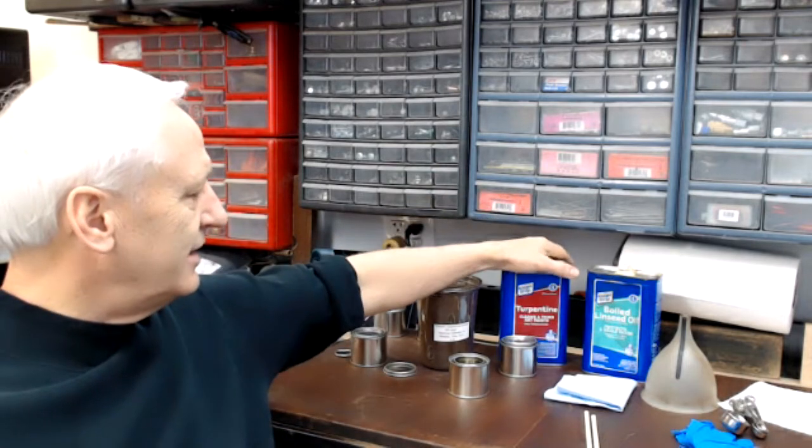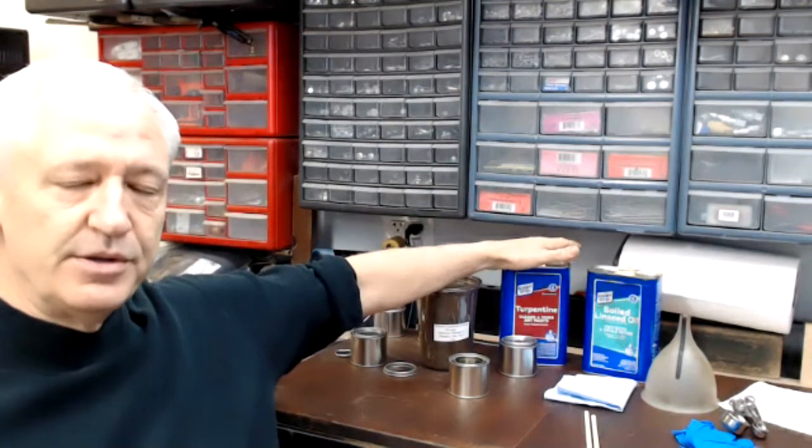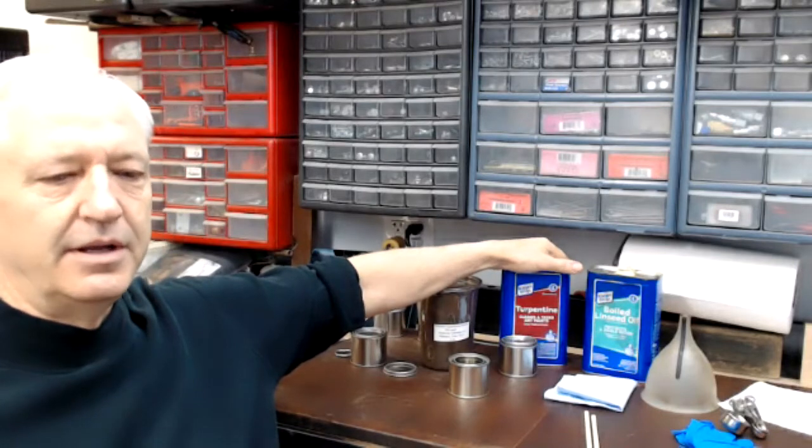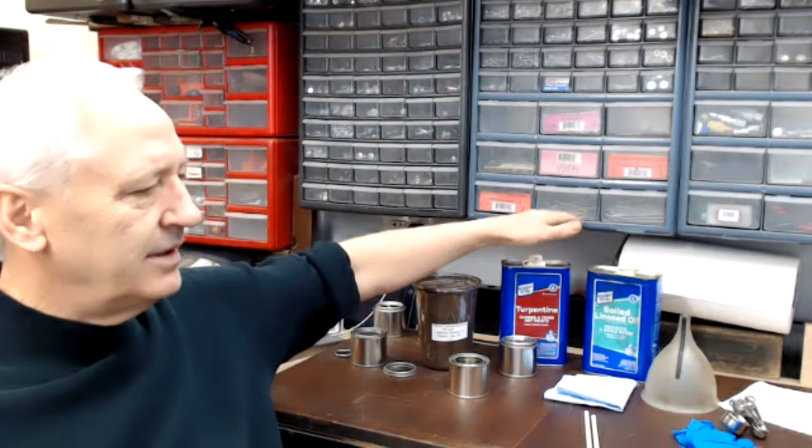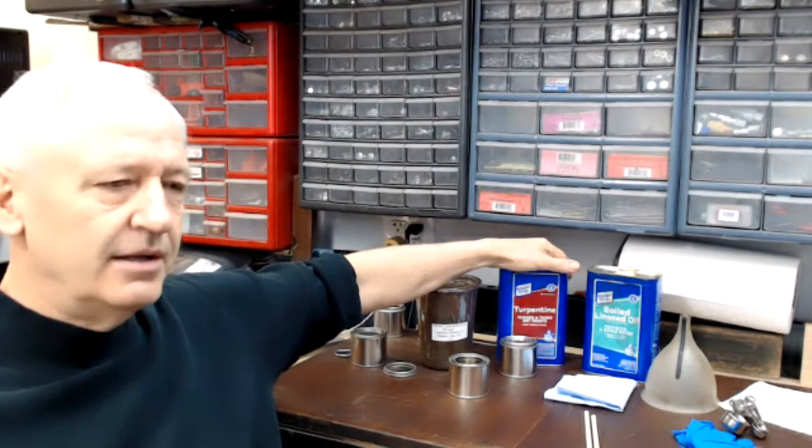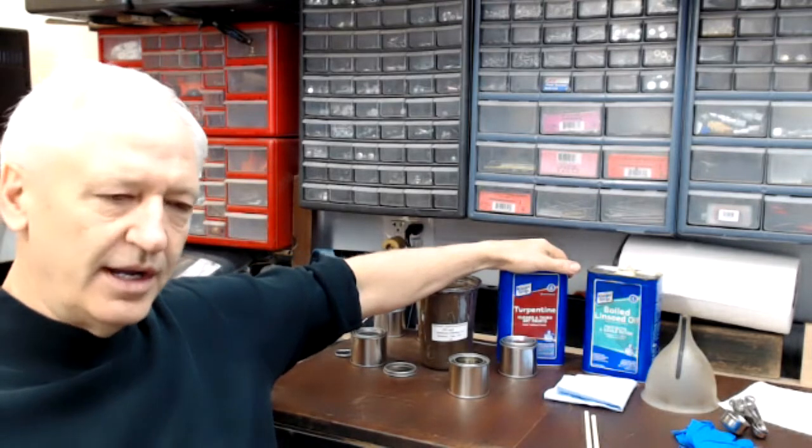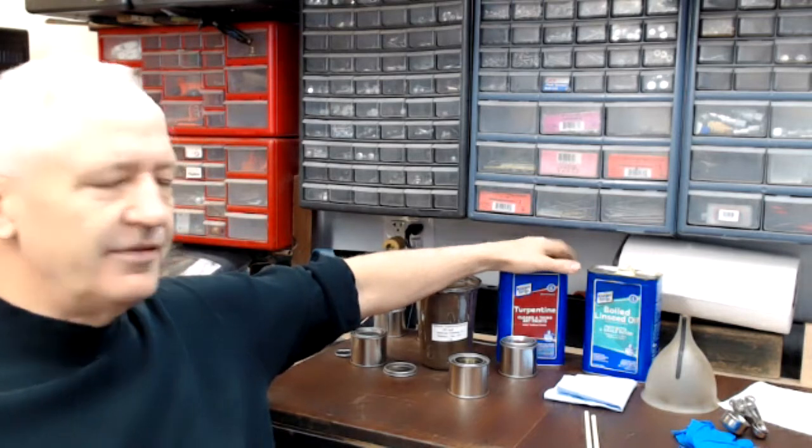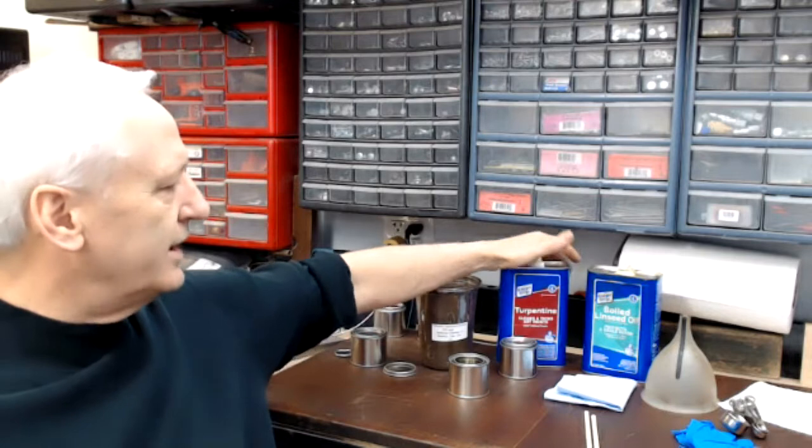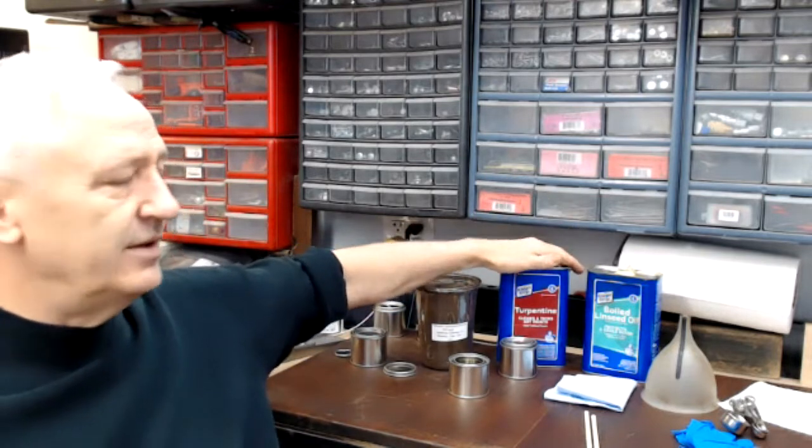Turpentine. This is not gum spirits of turpentine. It's not necessary. Big box turpentine works just fine. If you want to use the other, that's fine, it's simply more expensive. I believe this stuff is made from wood pulp in large quantities, but it works just fine as a solvent for Japaning.